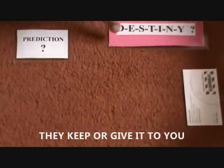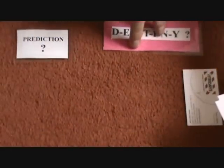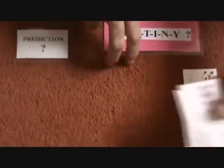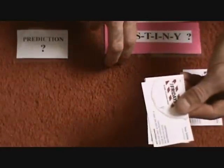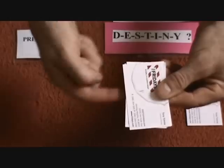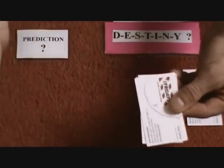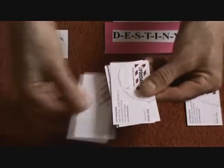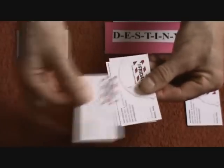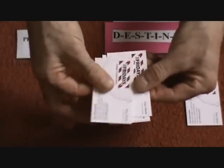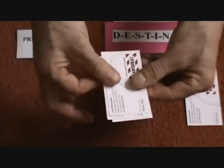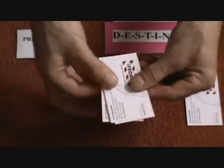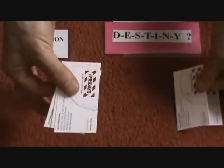Now you spell out the word 'destiny', moving one card from the top to the bottom for each letter: D-E-S-T-I-N-Y. So that card gets matched with that card.